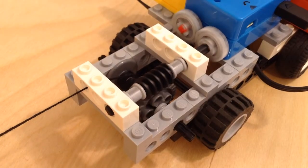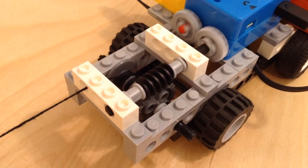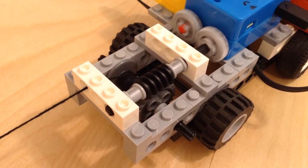This drivetrain doesn't make the vehicle go, instead it drives the spindle at the front that winds this rope.